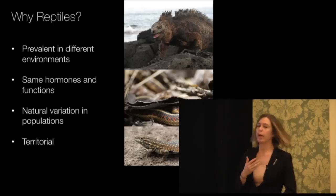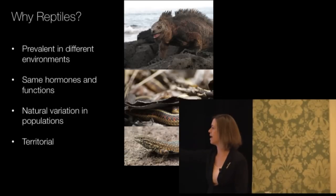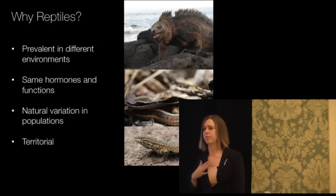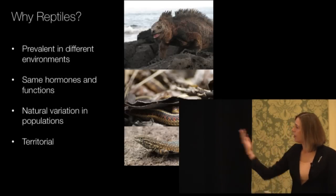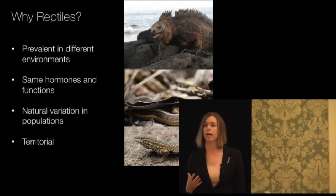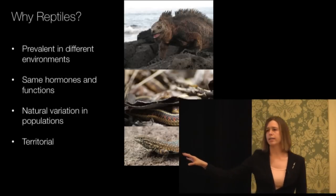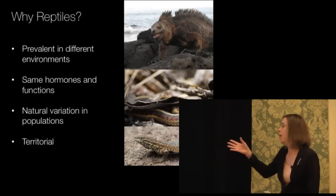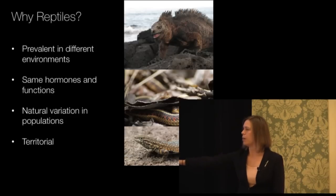They have actually the exact same hormones related to the stress response that we do as humans and those functions are the same. So I could take my stress hormones and I could inject them into this marine iguana or this garter snake or the side-blotched lizard and get a physiological effect and vice versa — I could take their hormones and get an effect on myself. The other thing is when you're trying to understand how natural populations respond, you need to understand this variation. And a lab model is not necessarily the best model for this sort of question because most of those are bred to reduce variation.